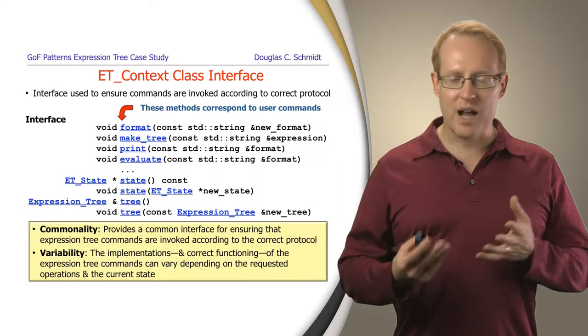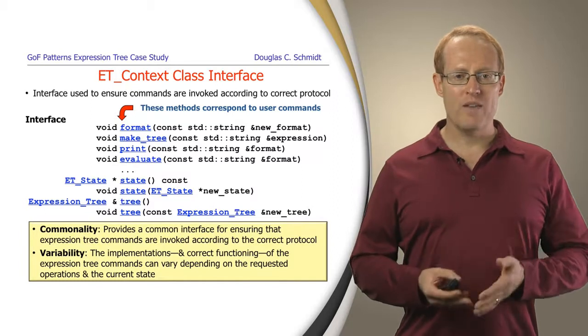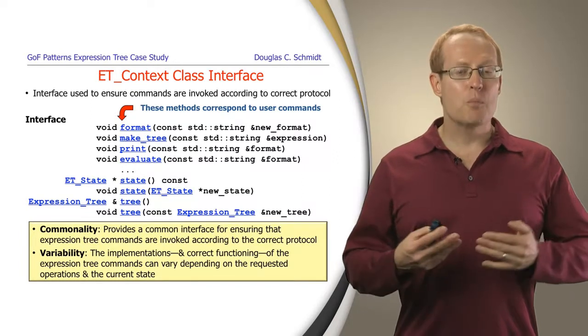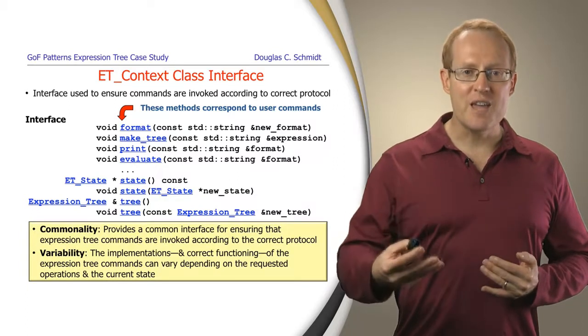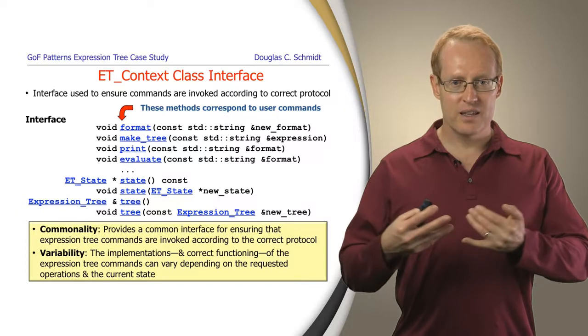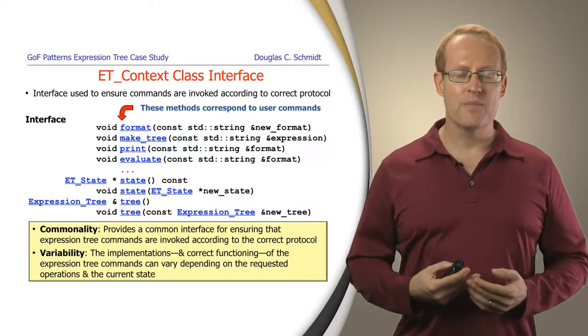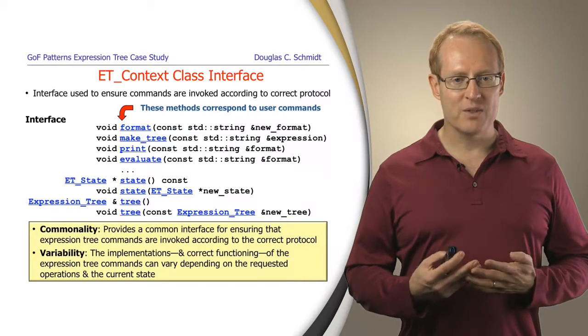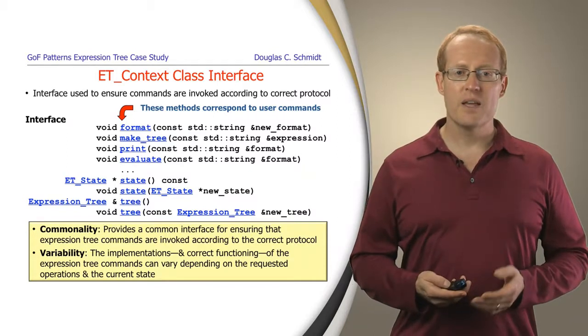And so, from a commonality and variability point of view, we have a way of having a fixed interface of the various commands you can run, but then we're going to vary the behavior of the implementation depending on what the state that we're in is going to end up being. And as you can see here, this particular class also has a way of being able to keep track of state information.